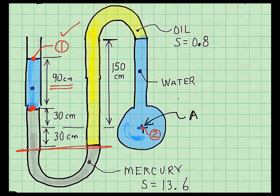And so that pressure change is gamma mercury times this distance, which is 60 centimeters or 0.6 meters. Then you move across to this point and you recognize the pressure's the same on the mercury side and the oil side of the interface.